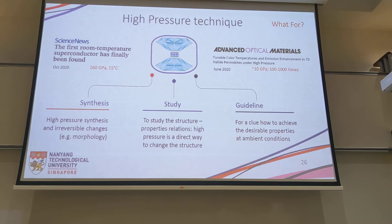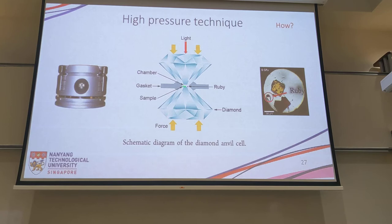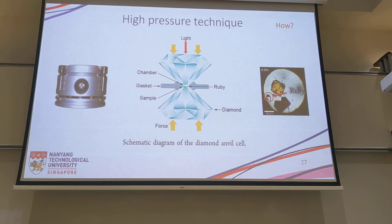We use a device called a Diamond Anvil Cell, which is quite small. There are two diamonds inside; we put the sample between them, add a pressure medium (usually a liquid or powder), and use ruby as a pressure reference. We compress, measure ruby fluorescence to determine pressure, and then study the properties of the material. This is how the sample looks loaded in the DAC — inside the gasket hole between the diamond anvils.